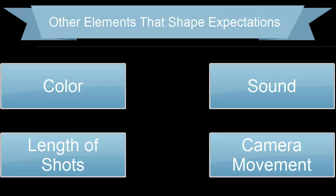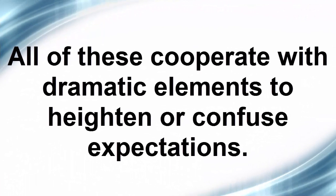Sometimes camera movement can also help shape our expectations. We see that in films like Raging Bull. All these cooperate with dramatic events and dramatic elements to heighten or confuse expectations. And one way of doing that is by establishing patterns, which we'll see in a different lesson.